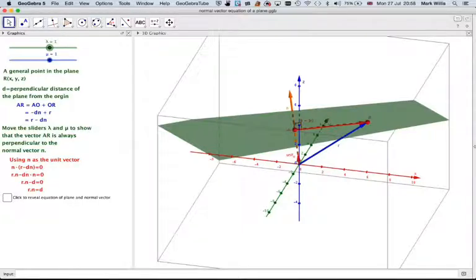We've got the point R here, which is any point in the plane, so we've got the vector O to R. Now, we've also got here, which you can just about see, is a unit normal vector. However, the normal vector of the plane, which is this orange one here, will always be perpendicular to another vector in the plane.